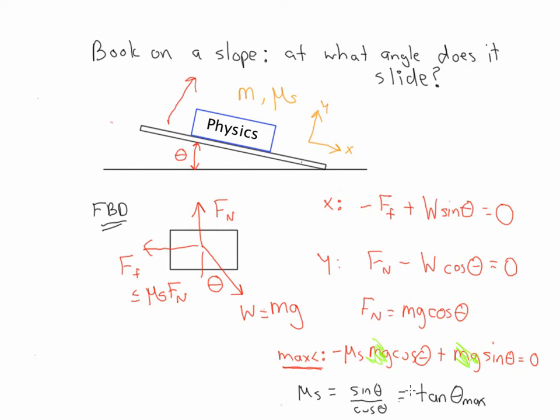Rewriting this, if I want to solve for theta max, I have to take the arctangent of both sides. So theta max is just going to be equal to the arctan of mu sub s, the coefficient of static friction.